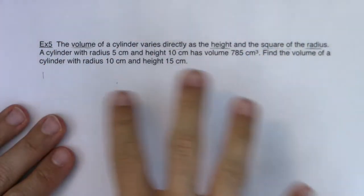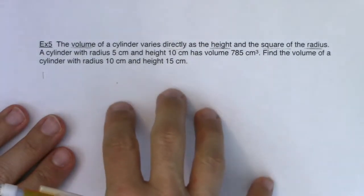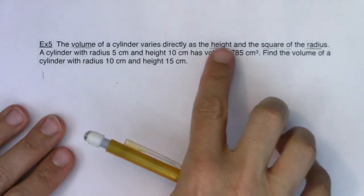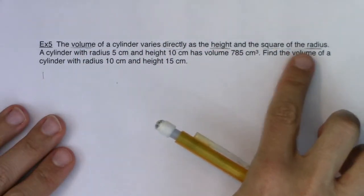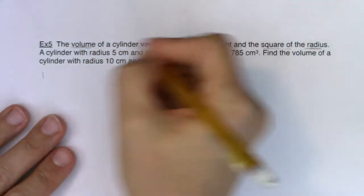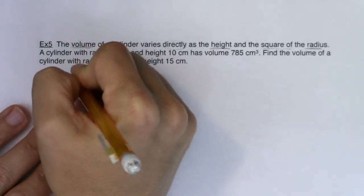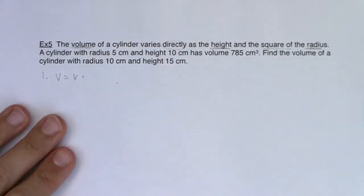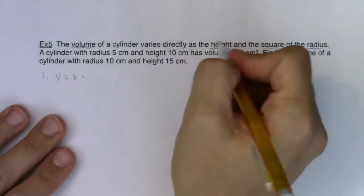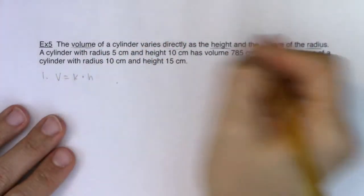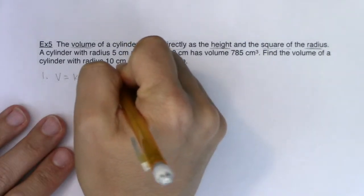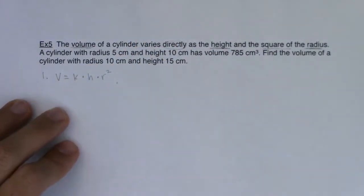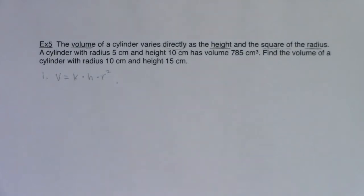The first step of any variation problem is to write your general relationship. It's going to involve all of these variables. I'm going to use V, H, and R, and I'm going to write an equation. It says volume varies directly. So when I hear varies directly, I'm going to have a constant of proportionality and a multiplication symbol. It varies directly as the height and the square of the radius. Volume is going to be equal to K times H times R squared.